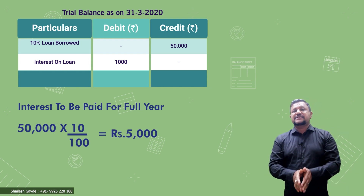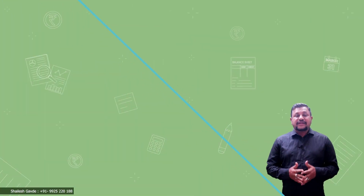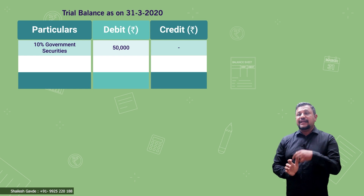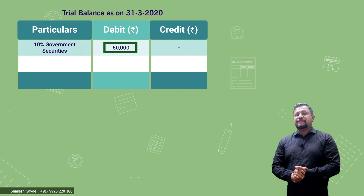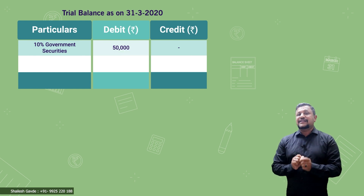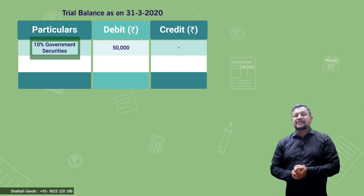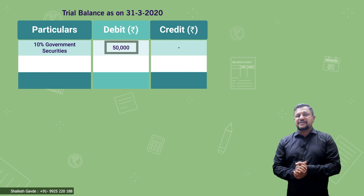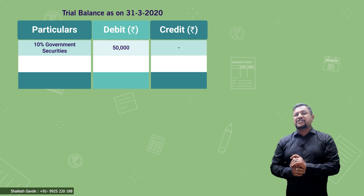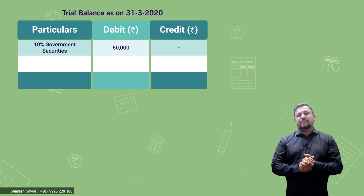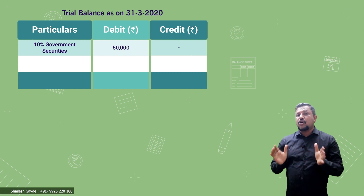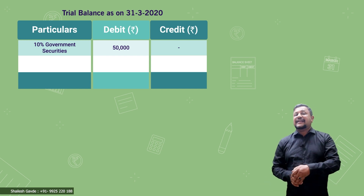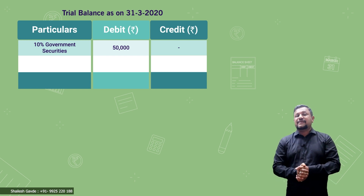Now we come to the next hidden adjustment. In the trial balance as on 31st March 2020, they have given '10 percent government securities' on the debit side: 50,000. This means the firm has invested in government securities — they purchased government securities worth 50,000 on which they are to receive interest at 10 percent per annum. But in the trial balance, no interest has been given on the credit side, which means the entire interest is outstanding and yet to be received.